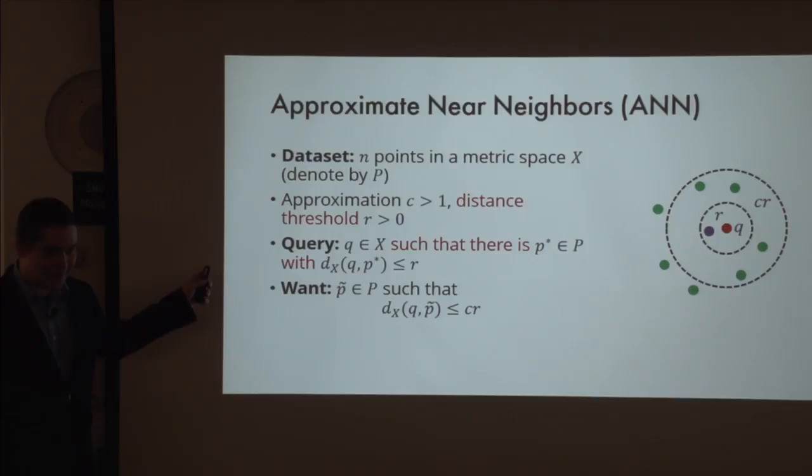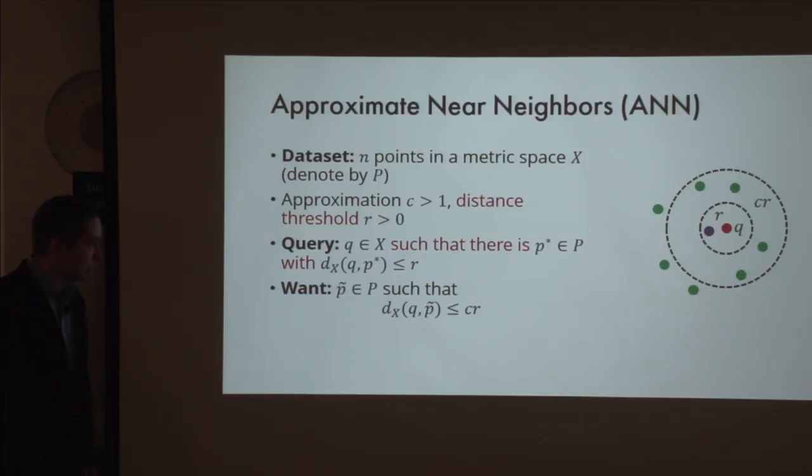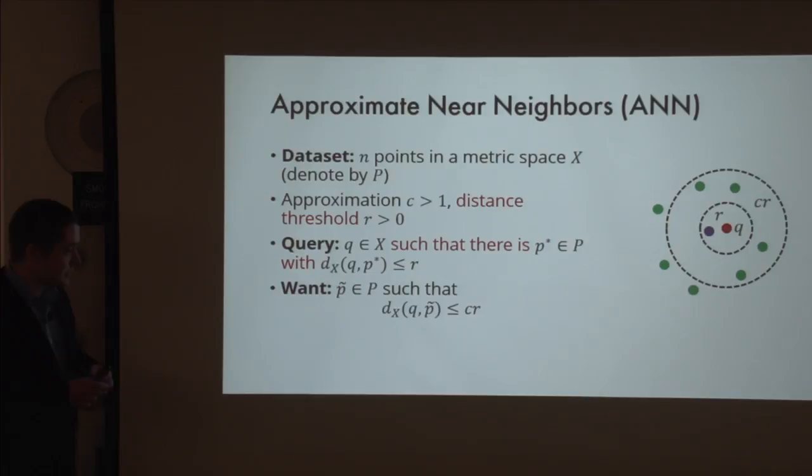The exact problem is hard. An important thing here is that the data structure knows parameters C and R in advance and can use this knowledge. In principle, another meaningful version of this problem is when there is no distance threshold—you just want to return the approximately nearest neighbor no matter what distance it is at. But this problem is equivalent; this formulation is just more convenient from a theoretical point of view.